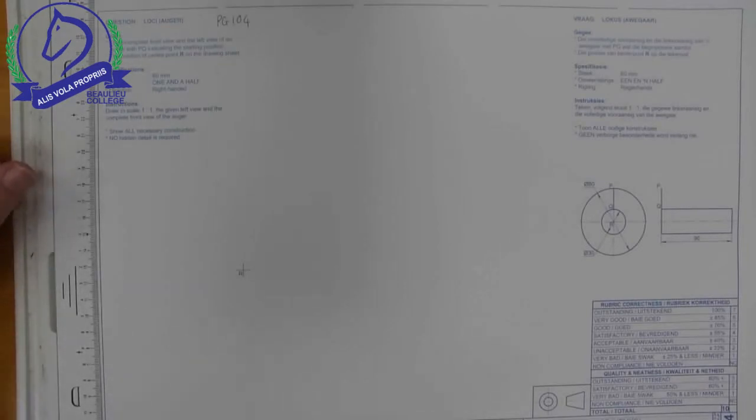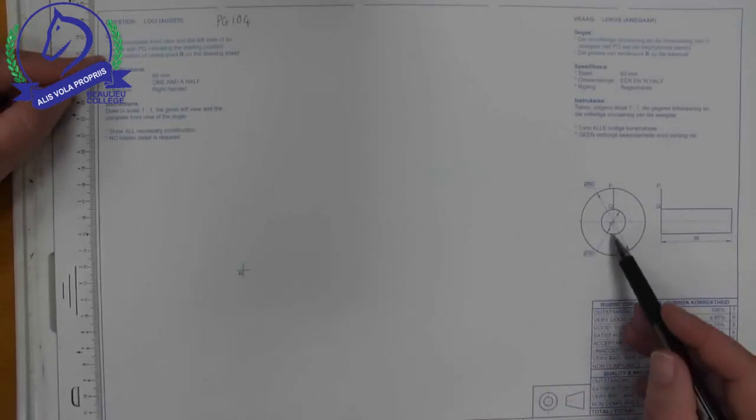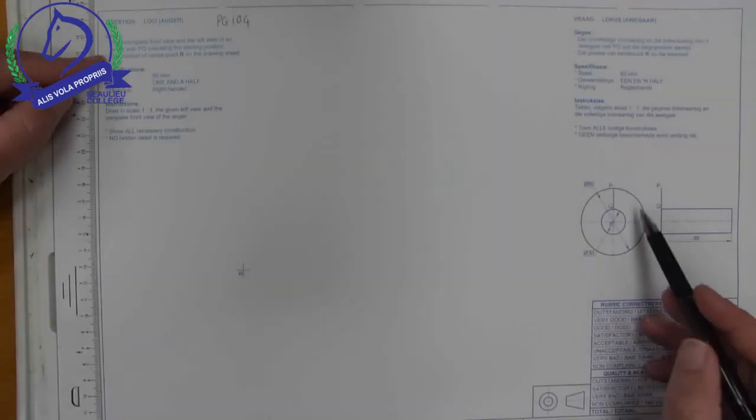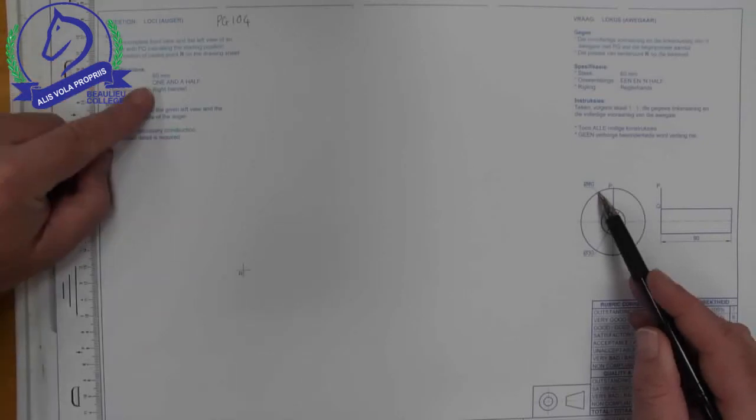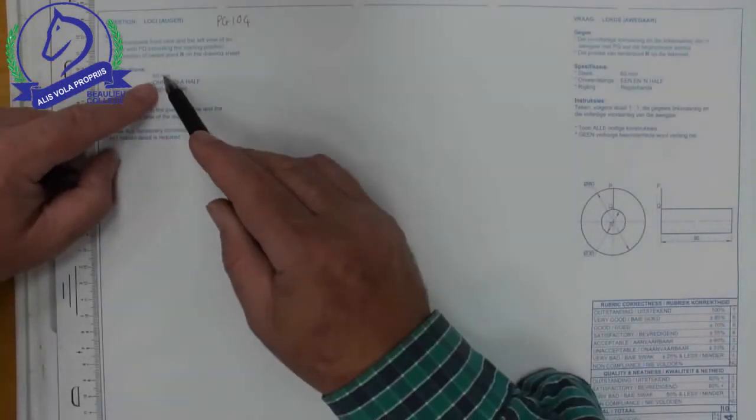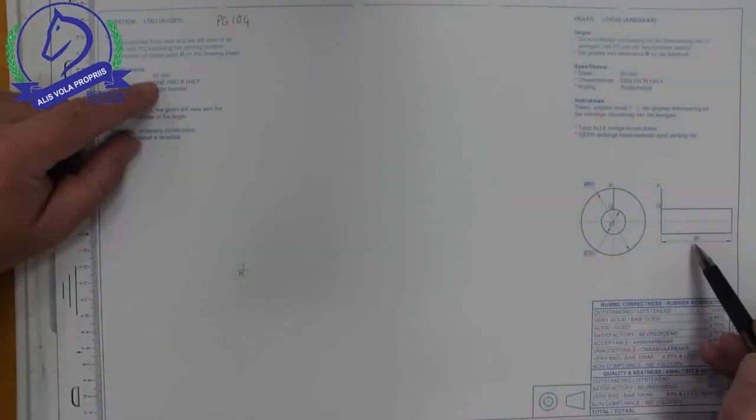It's still the same process, still an auger, and you've done them before. The information says R is the start point. We've got the core with a diameter of 30, the outside edge of the auger with a diameter of 80.